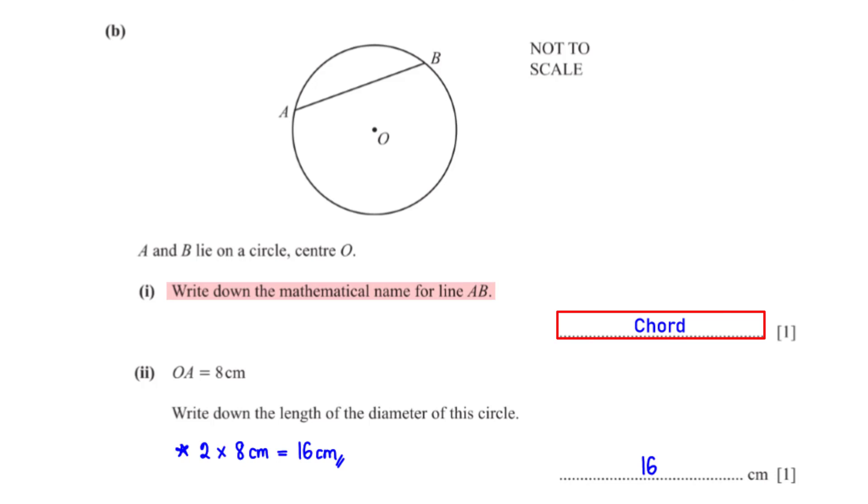A chord is a line that connects any two points on the circumference of a circle. OA is 8 centimeters. Write down the length of the diameter of this circle. OA, which is the radius of the circle, has been given as 8 centimeters. The diameter is twice the radius. So we have 2 times 8 centimeters, which is equal to 16 centimeters.